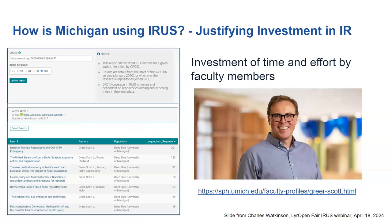This is an example from the University of Michigan. They're using IRIS with three different repositories on campus — we had them present a case study recently along with MIT. What this slide is illustrating is that you can actually get usage stats for individual authors based on the presence of their ORCID ID in your repository metadata. So in any cases where you need to help faculty members show what they've been up to and their impact, this could be a great tool for that.